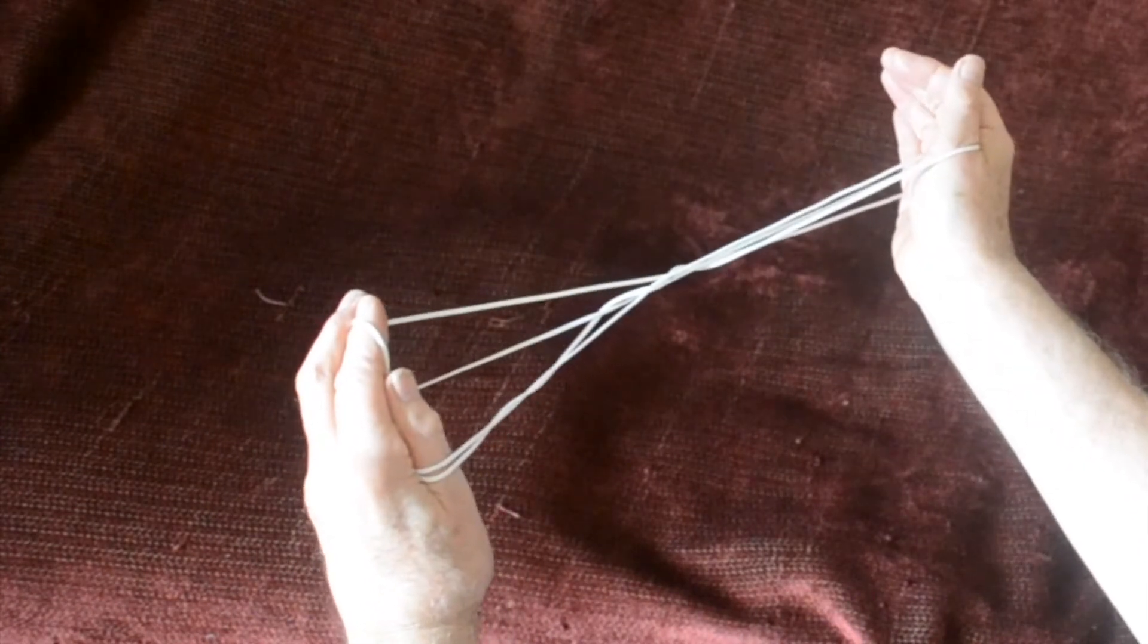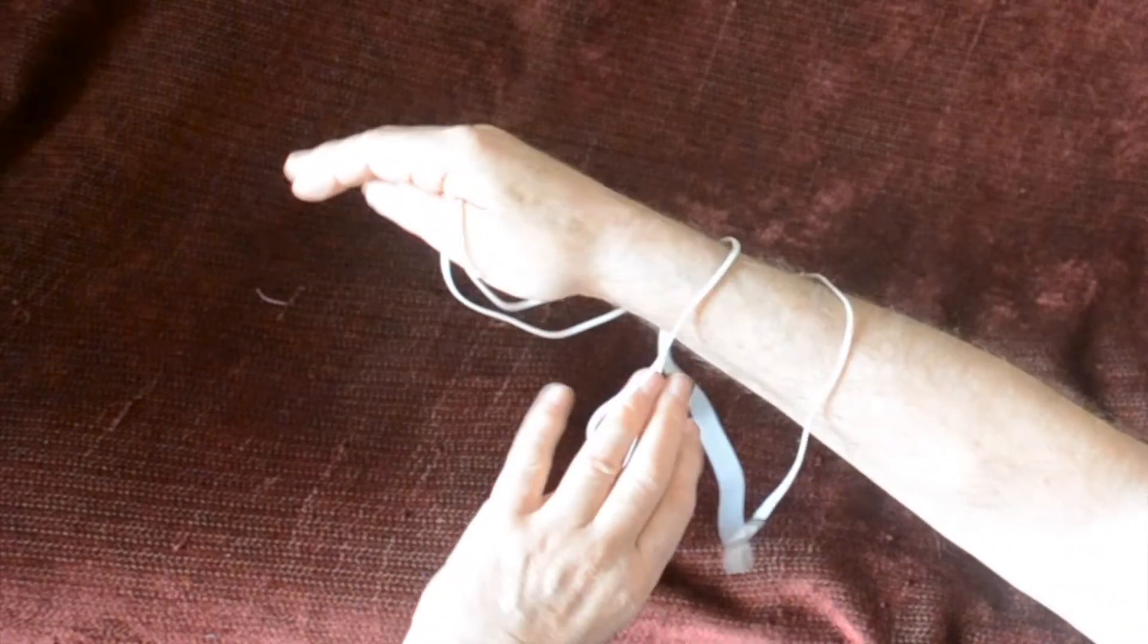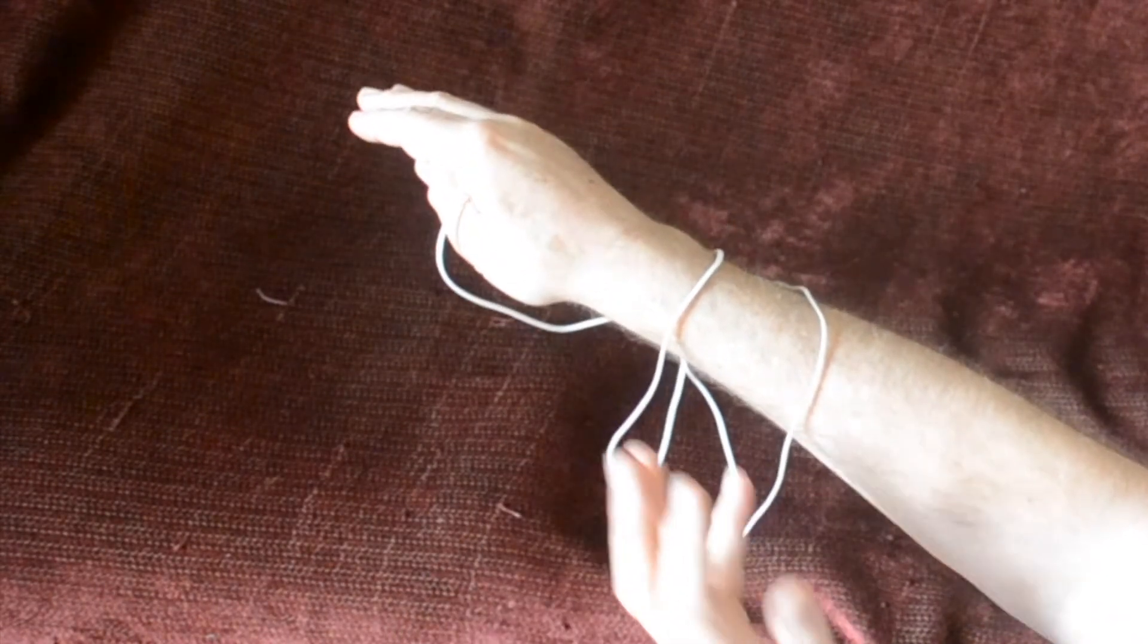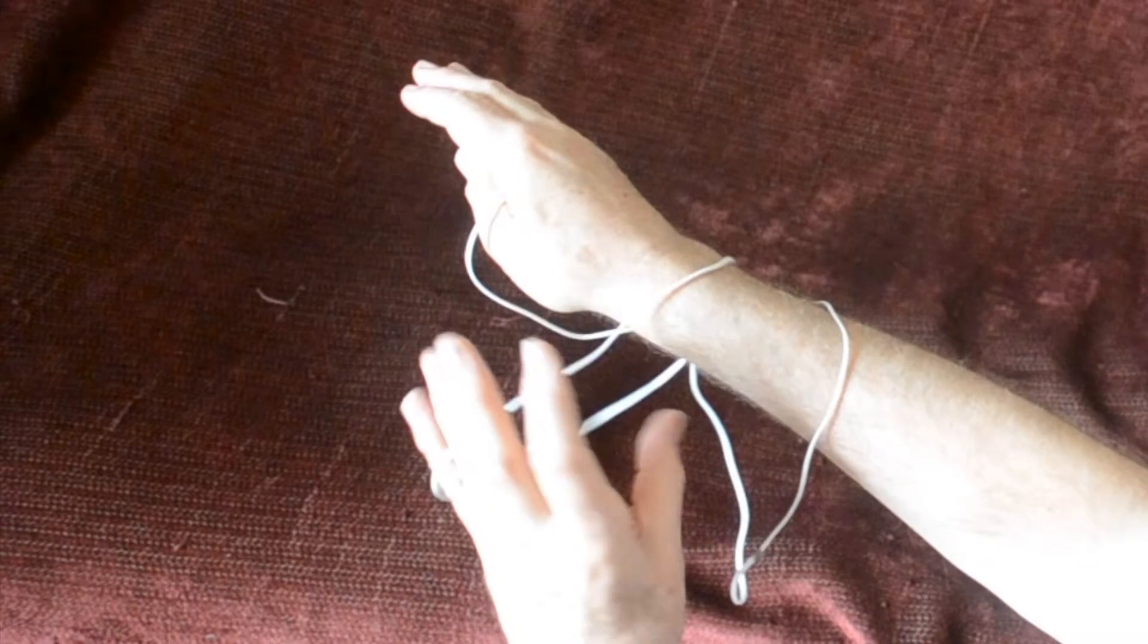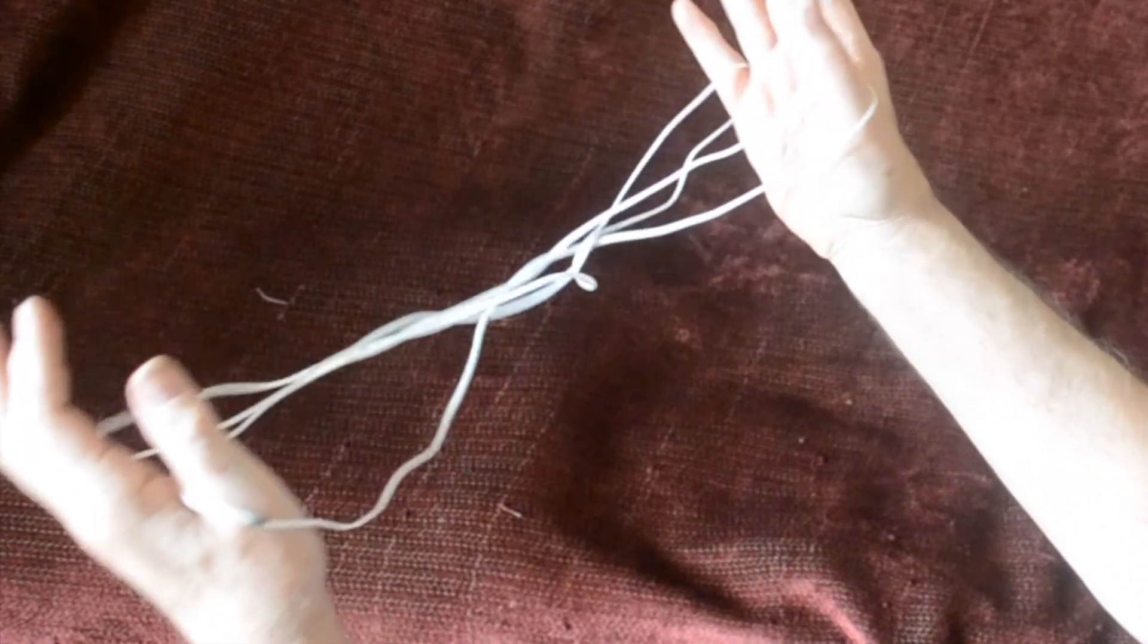And now take them off with a thumb coming towards you, little finger going away. I'll do the same with the other side so you see more clearly. The thumb goes right through close to the palm. Drop all together. And the little finger goes away from you and the thumb comes towards you. And then just move the hand back into position.